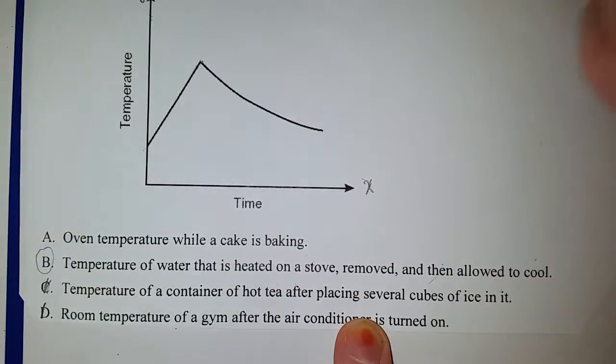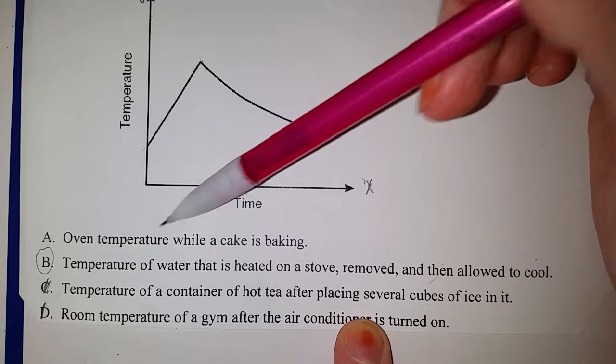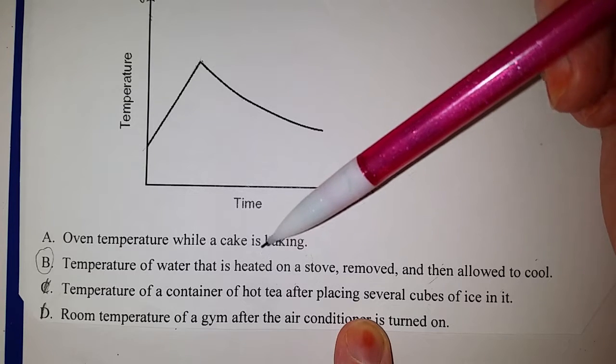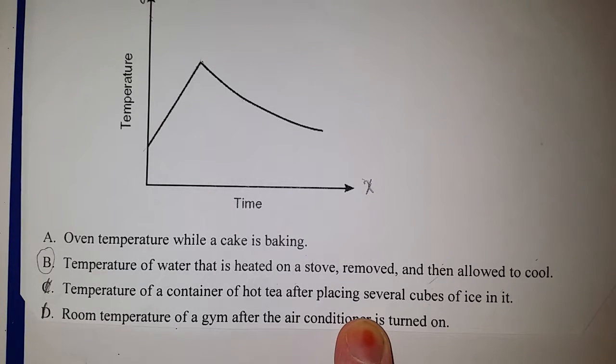Well, let's circle it. Let's see what A gives us and then we'll compare. A says the oven temperature while a cake is baking. Hmm, this is interesting. So you are preheating an oven, you are putting the cake in the oven, you're closing the oven, and then you leave the cake in there for a certain amount of time at a constant temperature, say at 300 degrees.